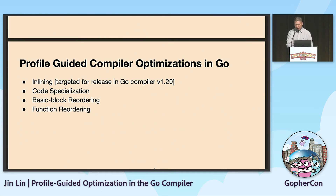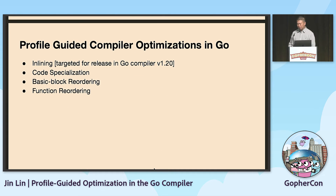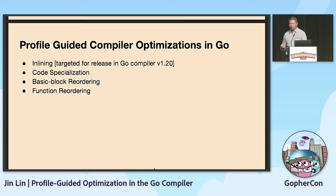Here are all the profile-guided optimizations we have implemented in Go: inlining, which is already implemented and should be released in the Go compiler in version 1.20, as well as code specialization, basic block reordering, and function reordering — all based on the profile.